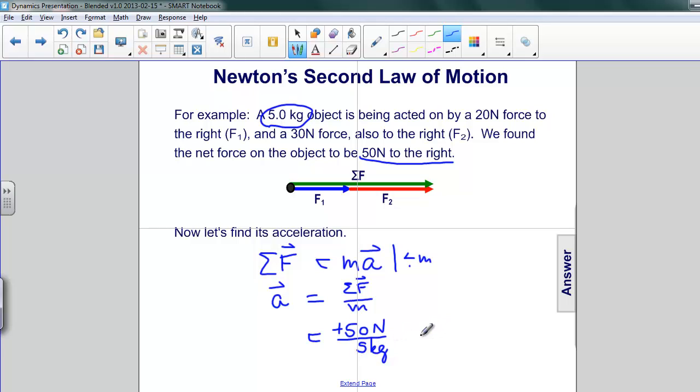50 divided by 5 is 10. Again, it's positive. And newtons divided by kilograms, as you may recall, is meters per second squared. So this is our acceleration here. Notice that the sign is positive, meaning that it's going to the right.